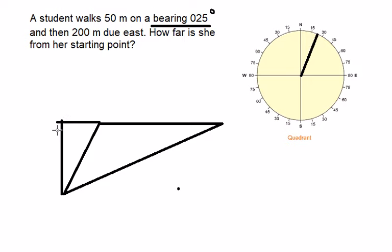We need to find the angle here so we can find the distance from her starting point to ending point. We know that this is about 25 degrees, so we have a right triangle in here, a right angle of 90 degrees.